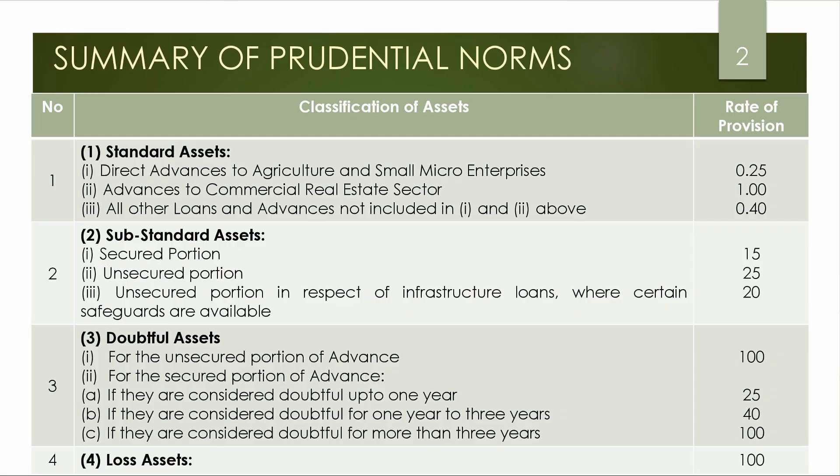Doubtful Assets have a Secured Portion and an Unsecured Portion. For the Secured Portion: up to 1 year is 25%, 1 to 3 years is 40%, and more than 3 years is 100%. The Unsecured Portion is 100%. The next one is Loss Assets, which is 100%.